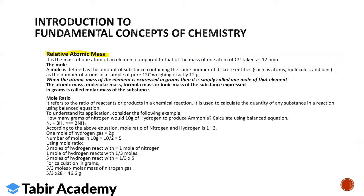The entities can be molecules, atoms, or ions depending on what we are talking about — an element, molecule, or ionic component. Mole is defined as the number of atoms in a sample of pure carbon-12 weighing exactly 12 grams. When the atomic mass of an element is expressed in grams, it is called one mole of that element. The atomic mass, molecular mass, formula mass, or ionic mass expressed in grams is called the molar mass of that substance.